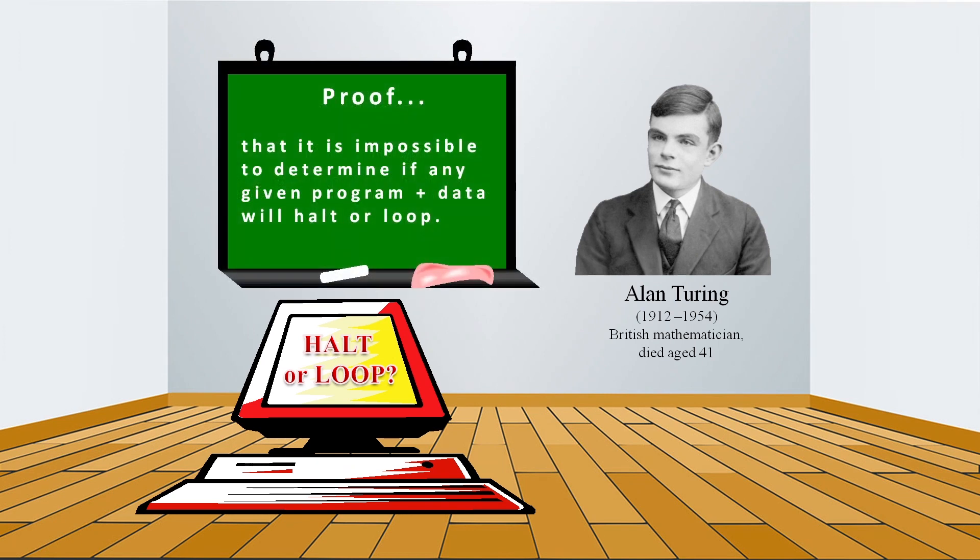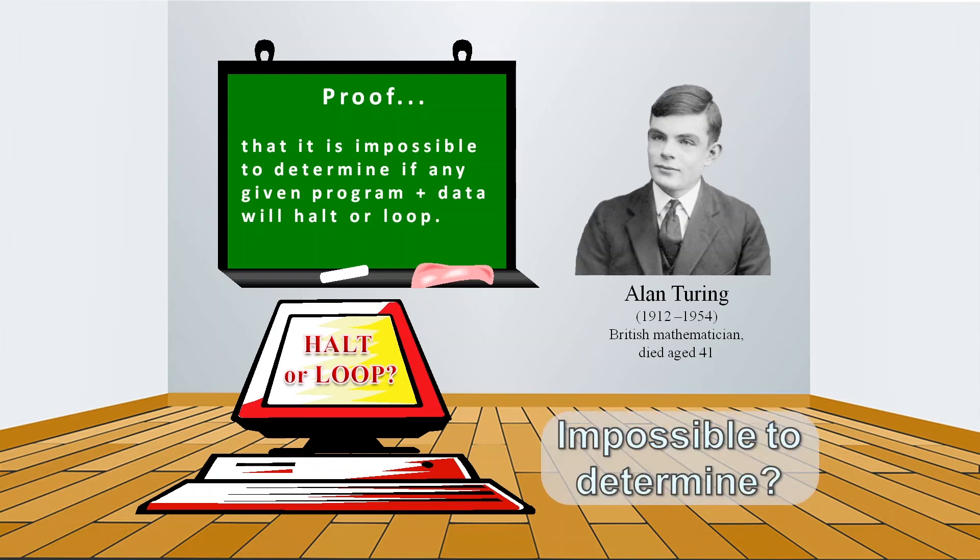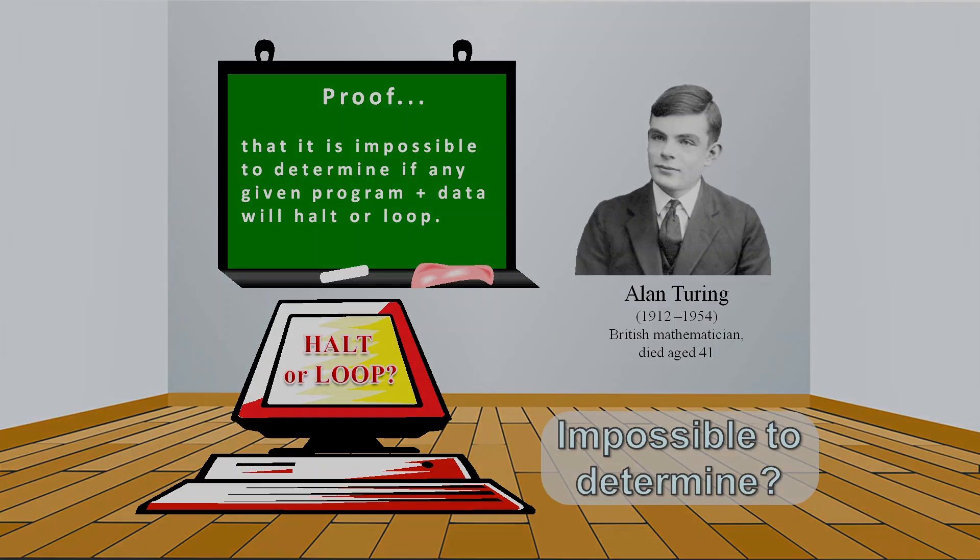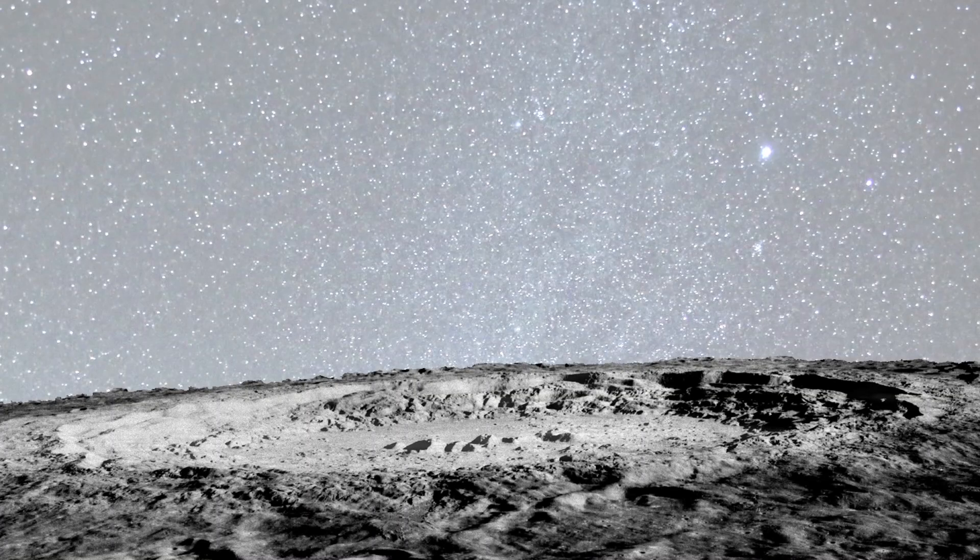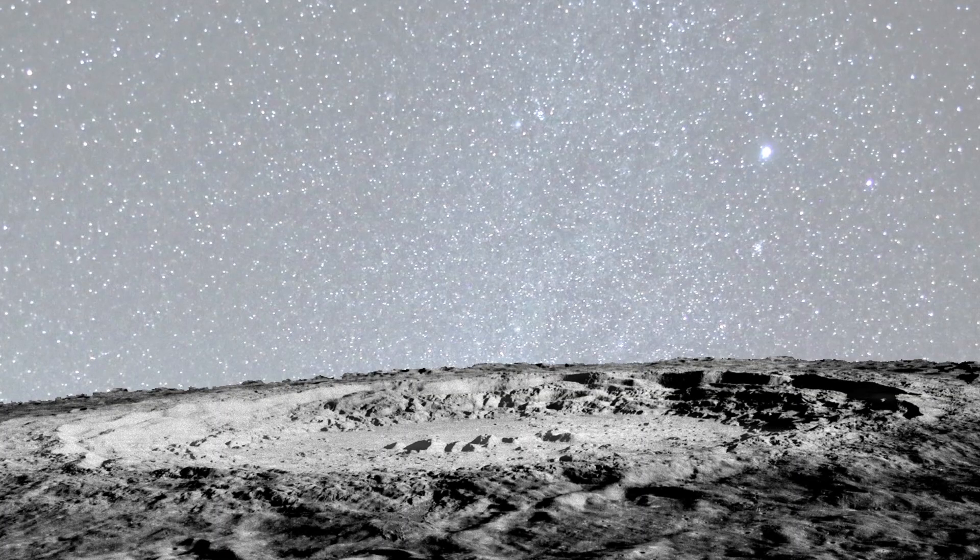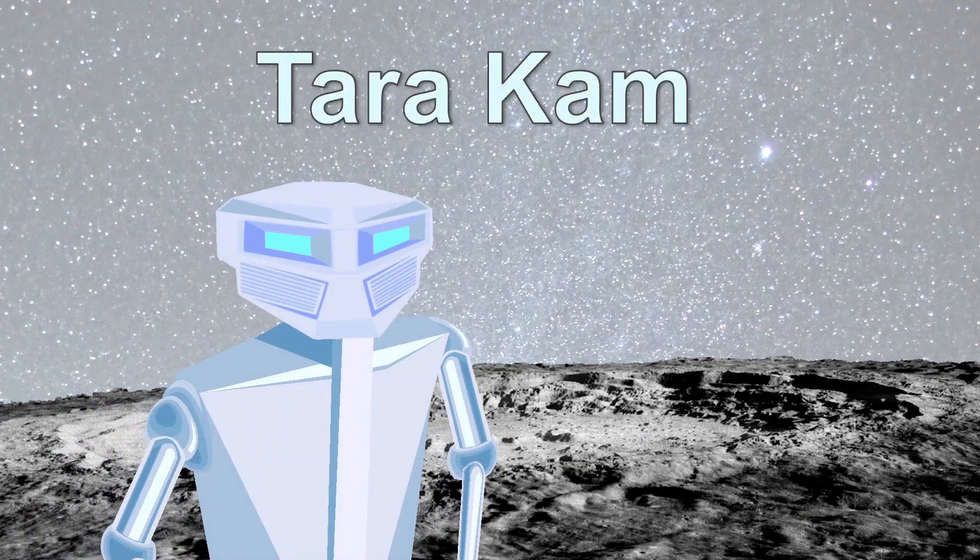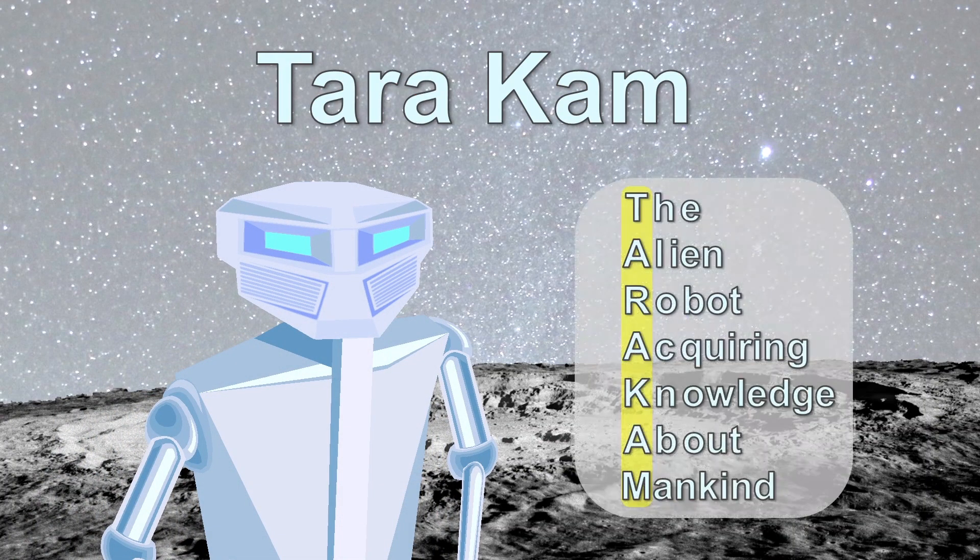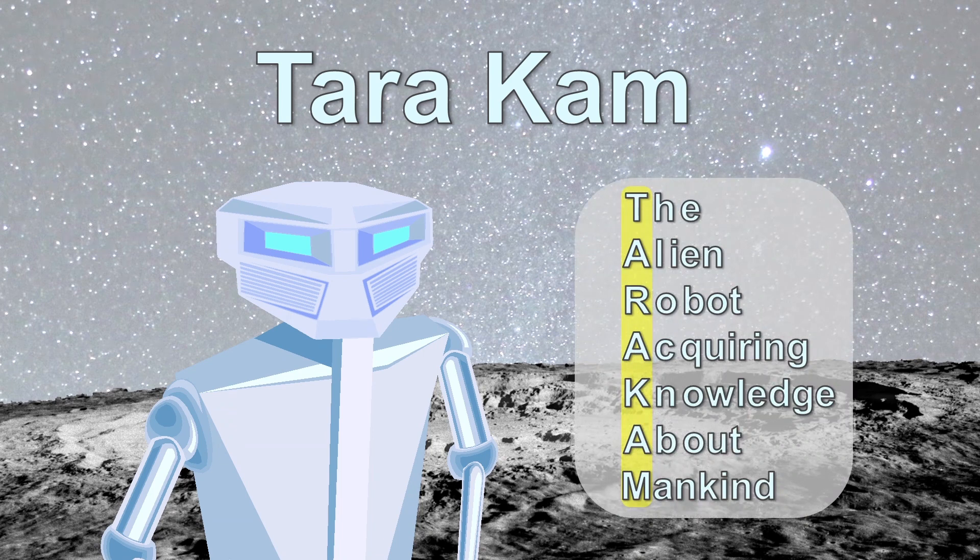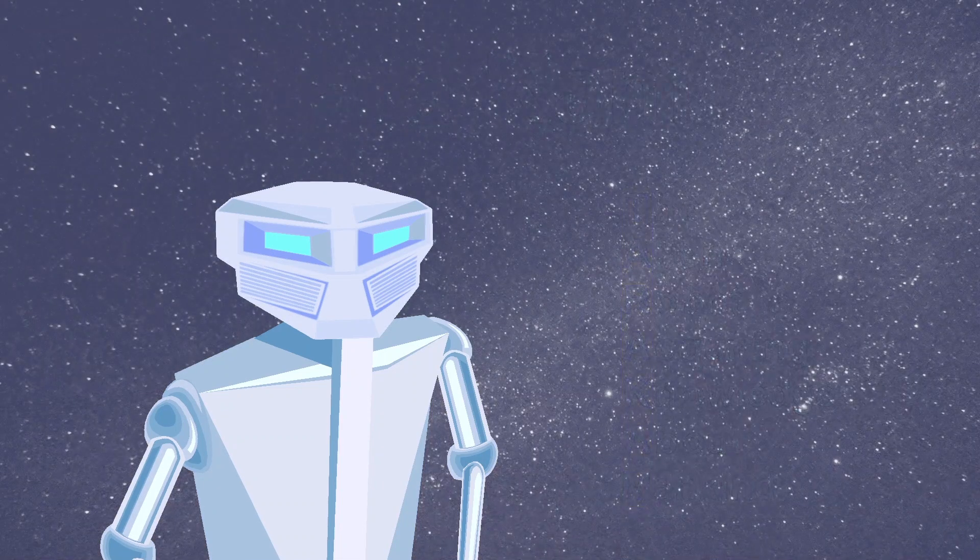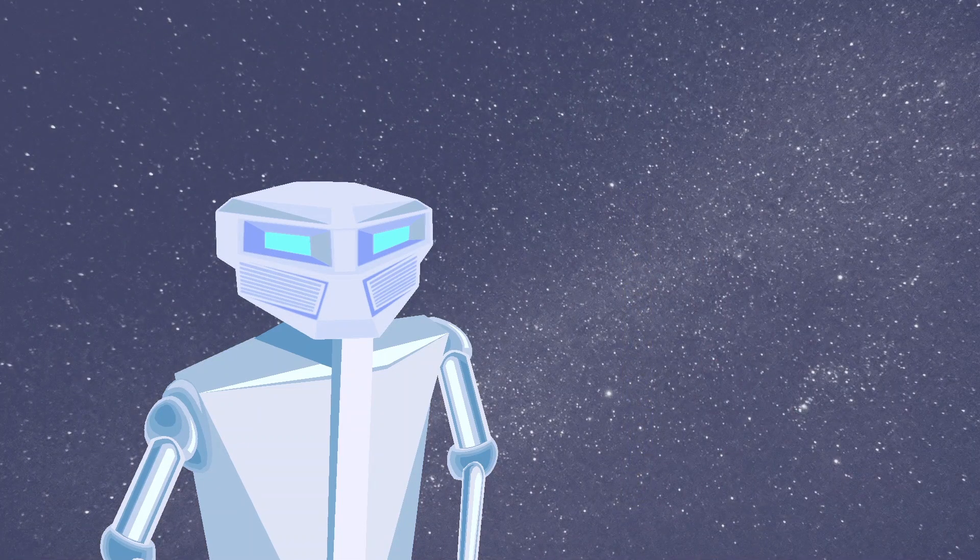Turing devised a proof to show that it was impossible to determine if a program would finish nicely or go into a loop. But not everyone agrees that Turing's proof is valid. Someone who strongly contests the logic of the halting problem proof is Tara, an alien robot who has been acquiring knowledge about mankind.